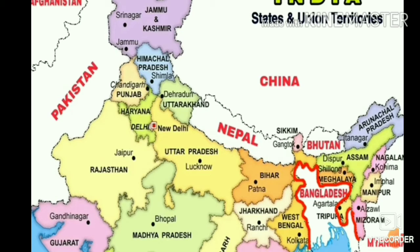The border line name with Bangladesh is called Purwachal Line. As you can see, West Bengal shares the most area along this boundary. Other states touching this boundary line are Assam, Meghalaya, and Tripura.